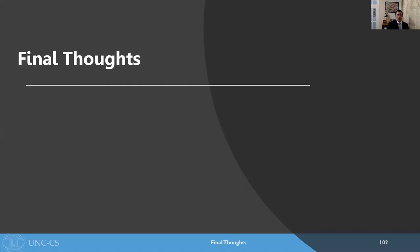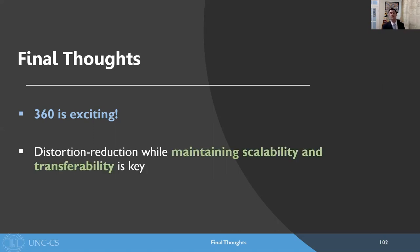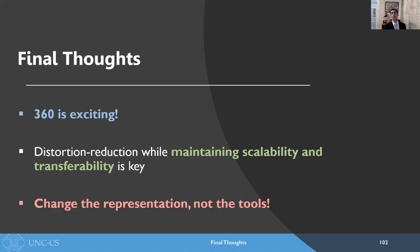So in conclusion today, I want to leave you with a few final thoughts. First, there's a lot of exciting applications of 360 imaging, so long as the tools are there to enable it. But it's not enough to simply solve the distortion problem — it needs to be a useful solution. For that, scalability and transferability are necessary attributes. And finally, I firmly believe that any general solution to the 360 image problem will be found by focusing on the image representation rather than the processing tools. And for that, I believe my contributions presented today provide a promising step forward.